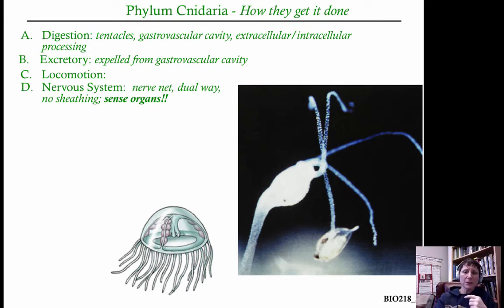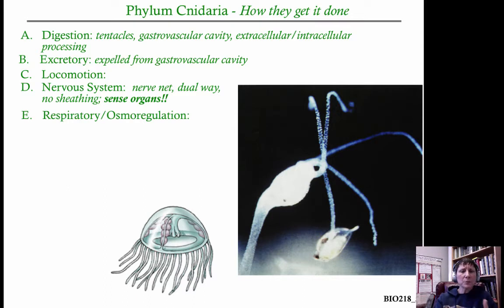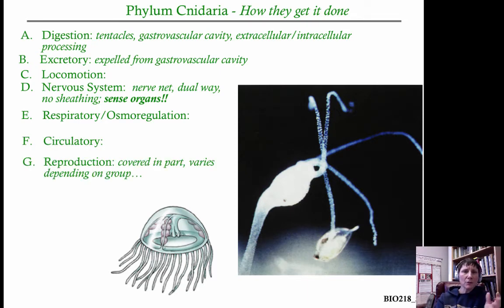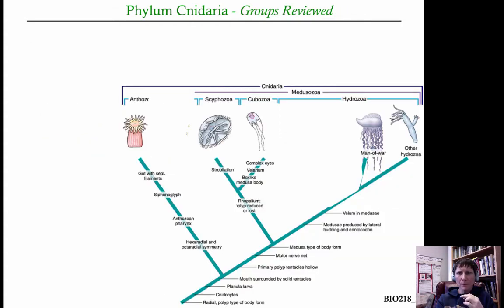In terms of locomotion, the medusa life form can move, while the polyp life form is pretty sessile — maybe moving tentacles side to side. The nervous system has a nerve net where the current can flow bidirectionally on the axons, and they have sense organs including statocysts and rhopalia. Respiration and osmoregulation are still done via diffusion and vacuoles — they don't have a respiratory system or circulatory system. Reproduction can be sexual or asexual.